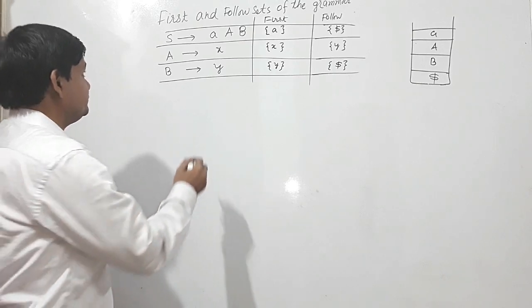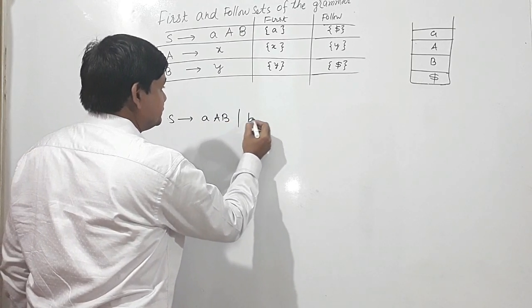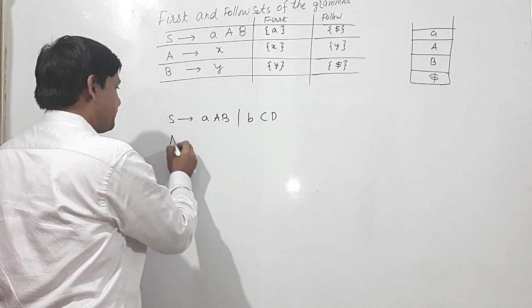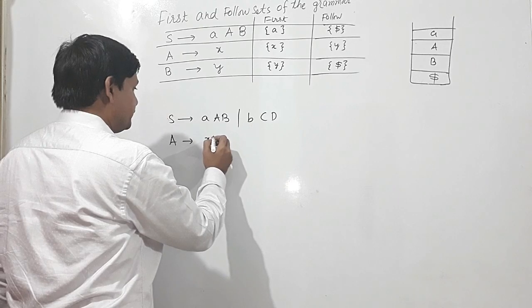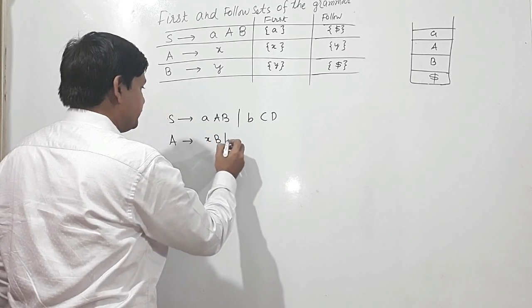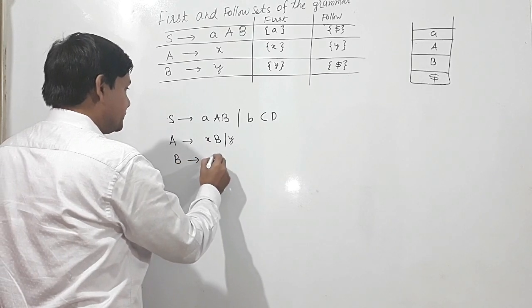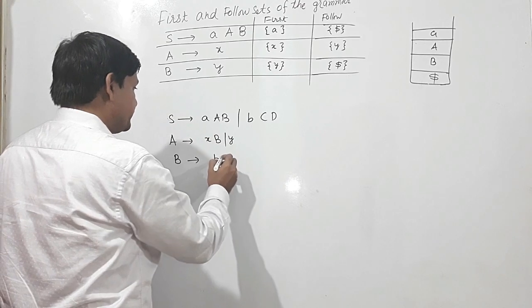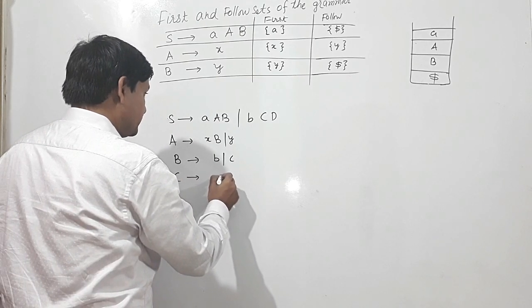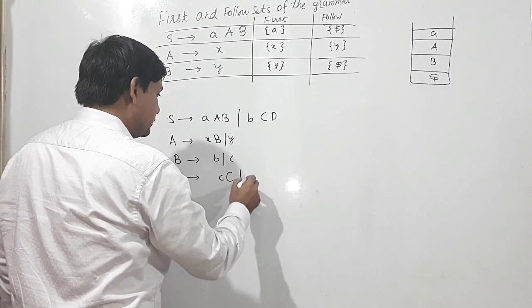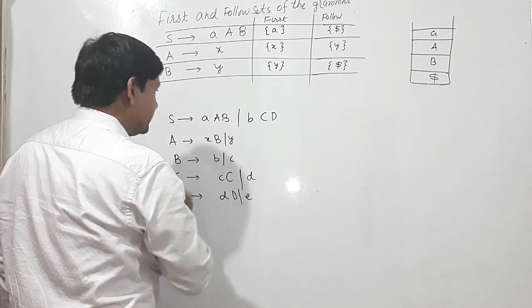I will take another grammar. This second grammar has productions: S→ab | bc, B→b | c, C→small c, c | d, and D→small d, d, r, e. This is our second grammar.